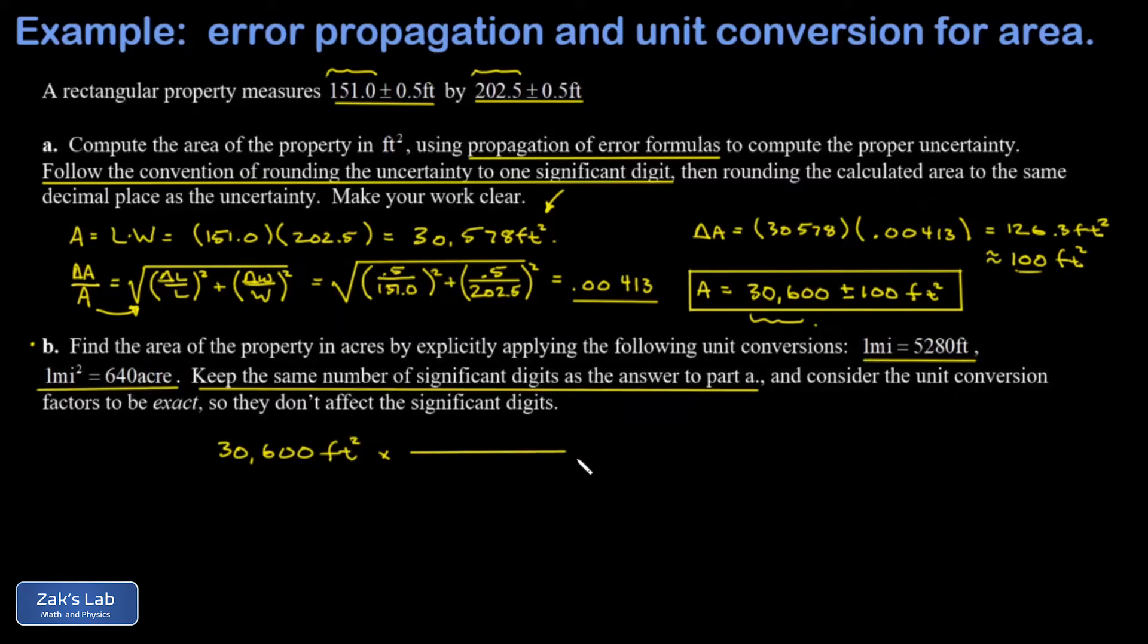So the first thing we're going to do is convert these square feet to square miles, and that requires two applications of this conversion factor. So I have 5,280 feet in a mile, and I need to square that conversion factor so it cancels two factors of feet, leaving me with square miles. Then I tack on my conversion factor of one square mile in the denominator for every 640 acres in the numerator.